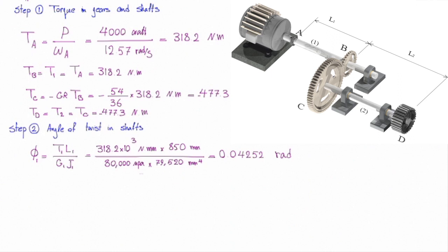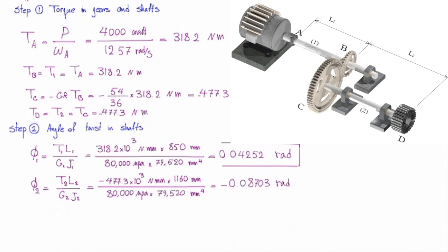Similar to that, we can determine how much is twist in the second shaft. Let's do the calculation here. Torque is 477.3 with a negative sign. Length is 1160. G is the same and J is the same. So, that gives us negative 0.08703 radian.